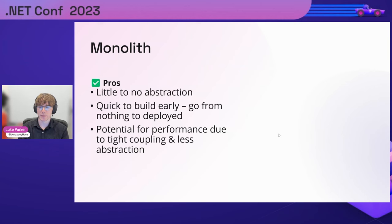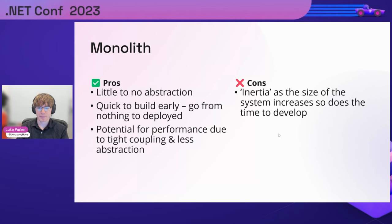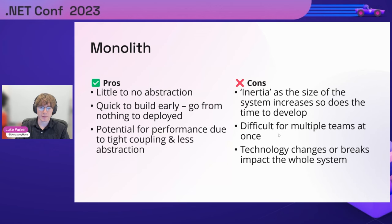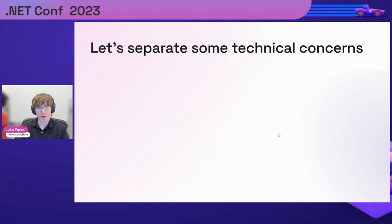You can also do things like AOT compilation. There are some cons though: if you're building a larger app, there's a concept I like to call inertia — as your codebase increases in size, the time and cost to develop new features increases at an exponential curve. Because of that tangled mess, it's difficult for multiple teams to work on the same codebase, and any technology change basically breaks the whole system. It's also very hard to test due to the spaghetti nature of it.